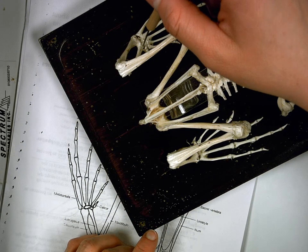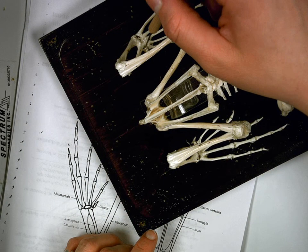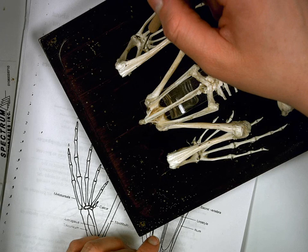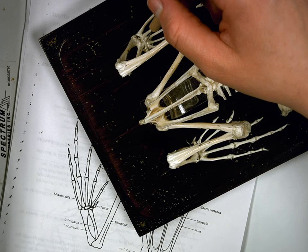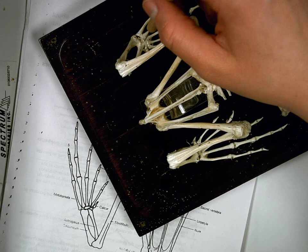Now if we look at the wrist, all the little bones that we see here, all these little tiny ones making up this wrist-like, ankle-like area, would be the tarsals, all the little tarsals.